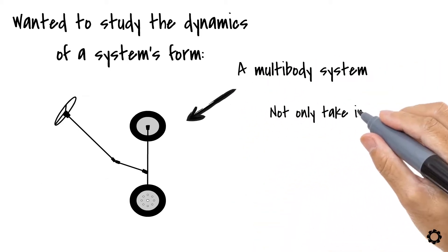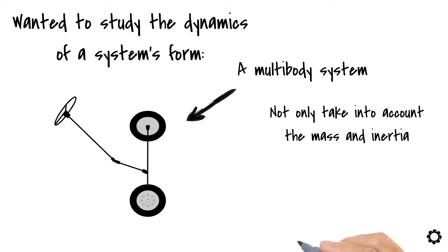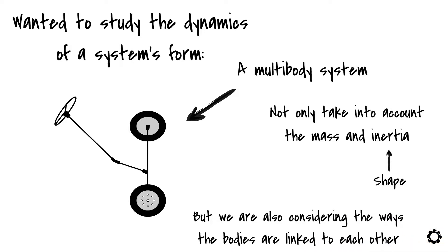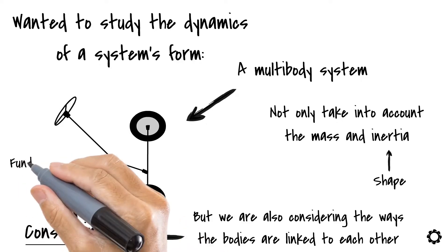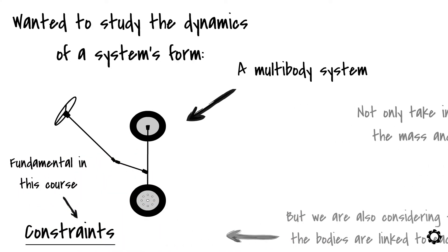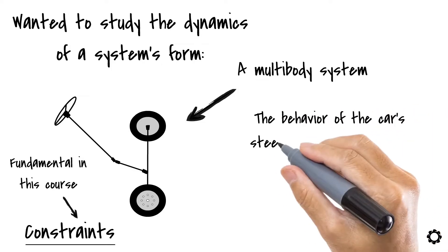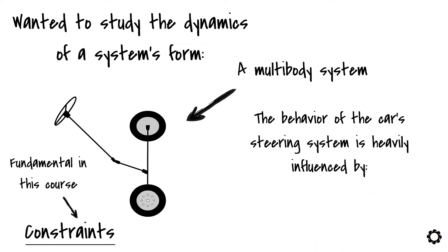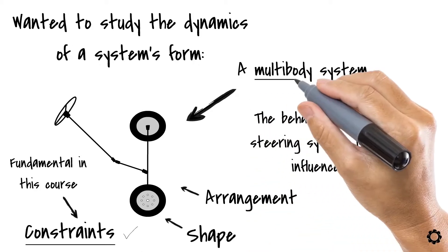In this case, we are not only taking into account the mass and inertia originating from the shape of each of the bodies, but we are also considering the ways the bodies are linked to each other by means of – wait for it – constraints. Write this word down because it is fundamental in this course. To lock down the concept, the behavior of the car's steering system is heavily influenced by the type of constraints we use and the shape and arrangement of this collection of bodies that we call multi-body system.